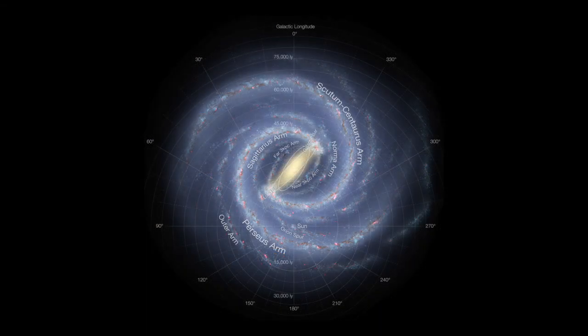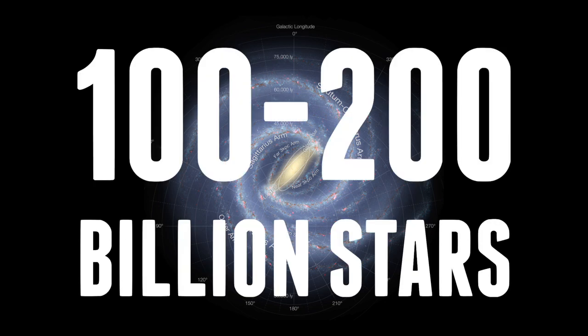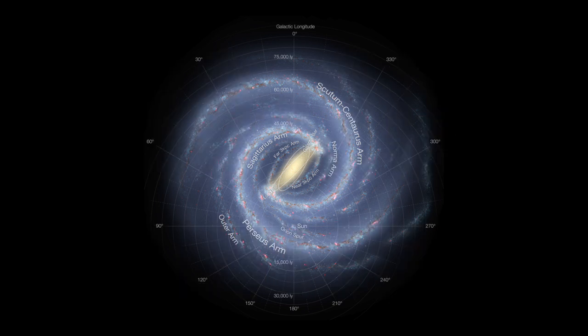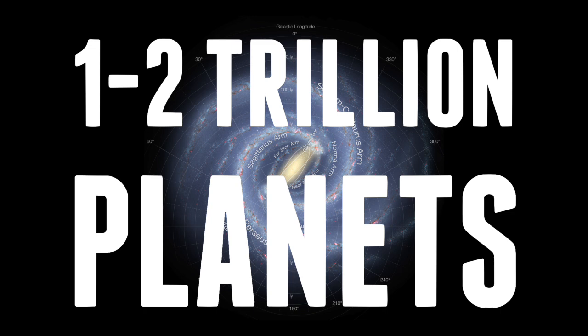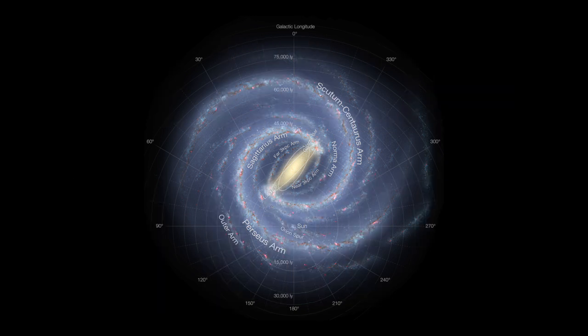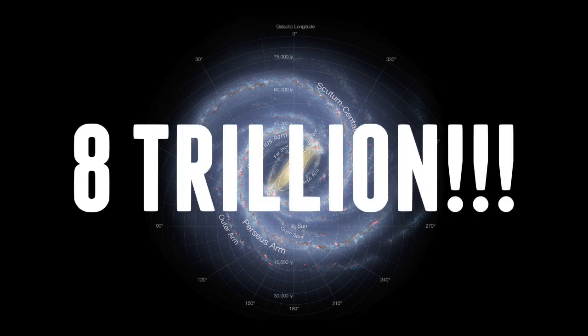So if we run through the calculations, we calculate that the galaxy contains between 100 and 200 billion stars. Doing the maths, the Milky Way galaxy has between 1 and 2 trillion planets. But some estimations can give you a number as high as 8 trillion.